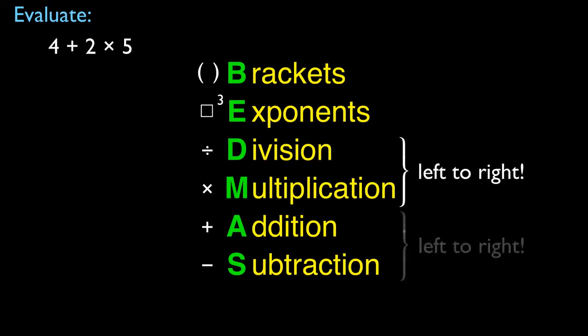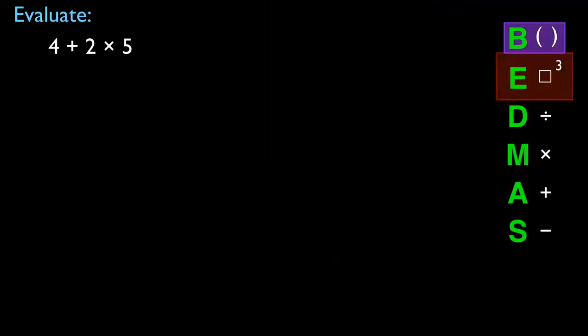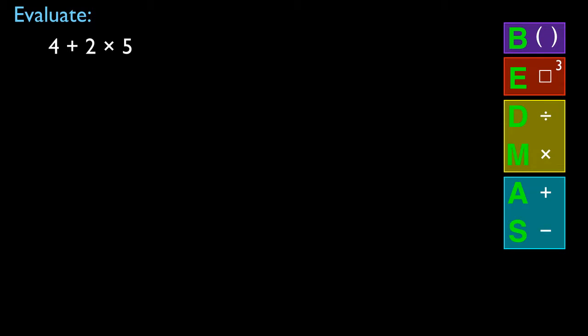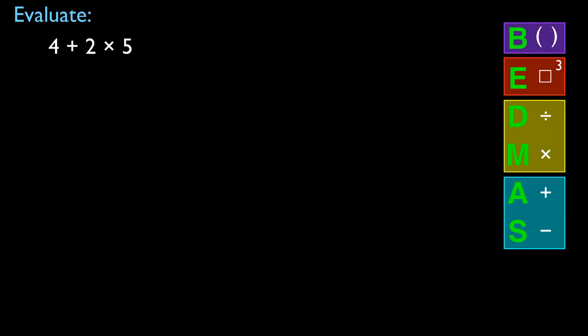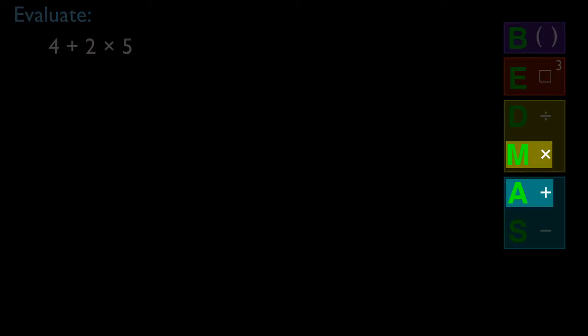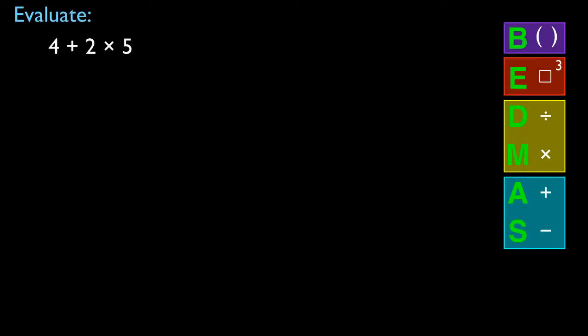These are performed left to right. So let's tackle this question using our BEDMAS ordering. Looking at 4 plus 2 multiplied by 5, I have an addition and a multiplication. There are no brackets, no exponents, but there is a multiplication — so multiplication outranks the addition. We perform the multiplication first: 2 times 5 is 10. Then we perform the addition: 4 plus 10 is 14. That's the correct answer.